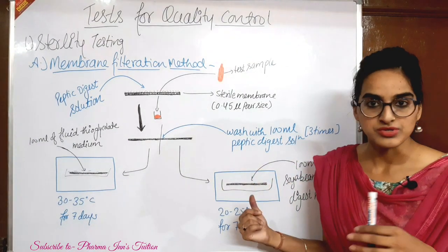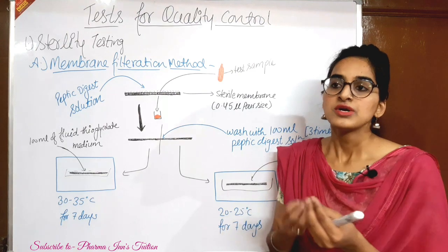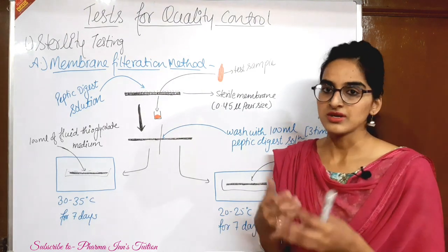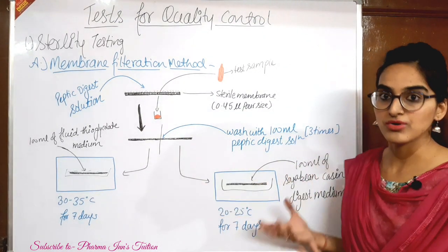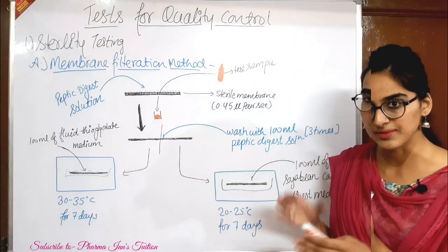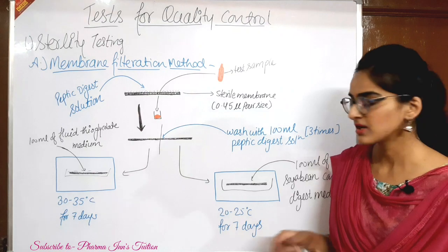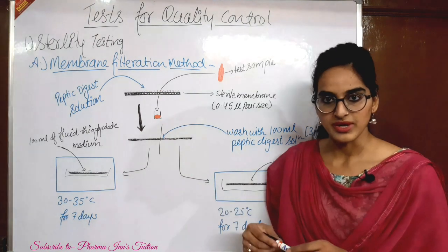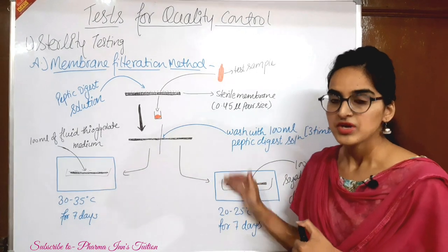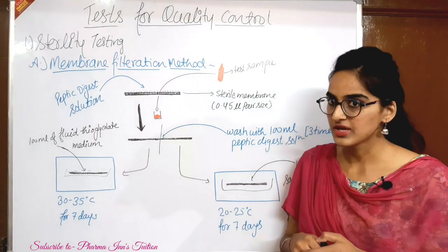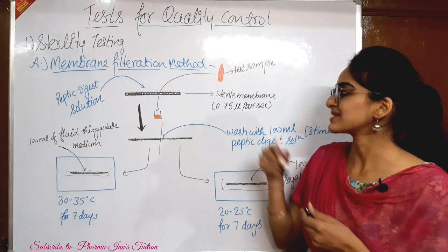For the second membrane part, we treat it with a different medium. First we used fluid thioglycollate medium; next we use soya bean casein digest medium. We use 2 different mediums because if there is no growth in one, it may come in another — so the chances of accurate test results are more. The soya bean casein digest medium is kept at 22–25 degrees Celsius and incubated for 7 days. After incubation, if microbial growth is observed, the test sample has failed.